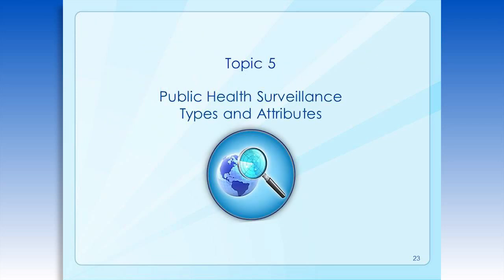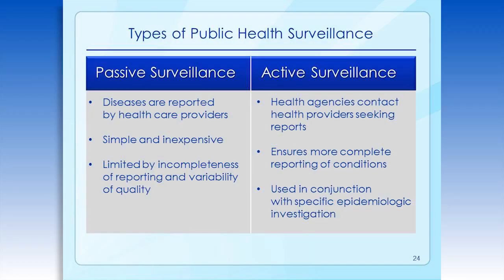Now we'll move on to a discussion of the various types of surveillance and some of the attributes of surveillance systems. We often divide surveillance into two categories — passive and active — depending on the amount of resources and effort put into it by the agency collecting the information. Most routine notifiable disease surveillance is considered passive. In passive surveillance, the physician, laboratory, or other health care provider takes the initiative in submitting the report by following a list of reportable diseases in that state. The state health department waits for reports to be submitted by others.